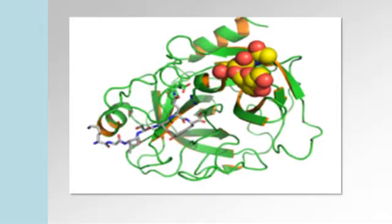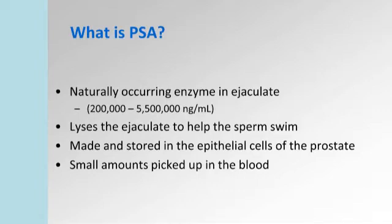That green squiggle there is the actual molecule responsible for this talk, which is PSA — purified from semen in the 80s, which has revolutionised prostate cancer treatment. Getting back to basics: PSA is a naturally occurring enzyme that the prostate makes and puts into the ejaculate. If you were to test the ejaculate, it's there in mega doses — 200,000 to 5.5 million nanograms per mil. So we're testing how much is leaking into the bloodstream.